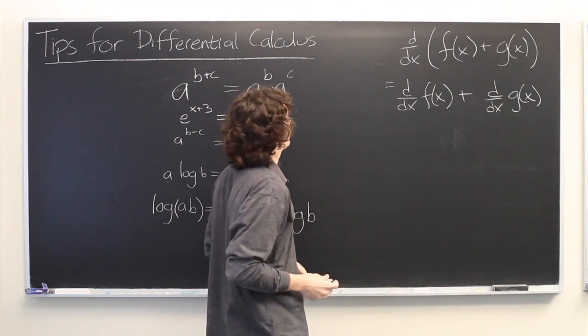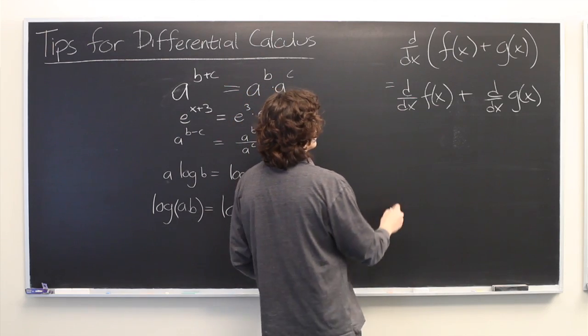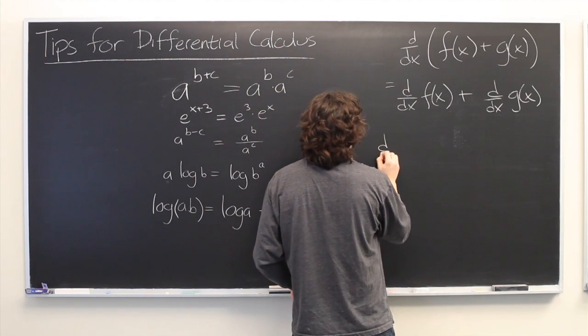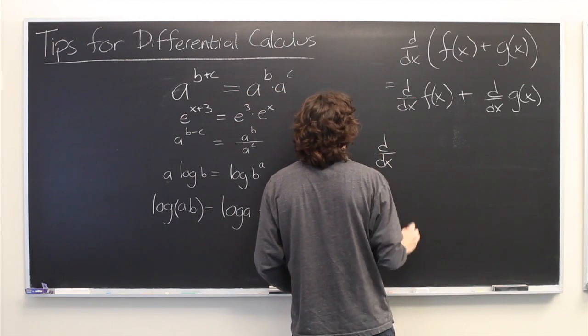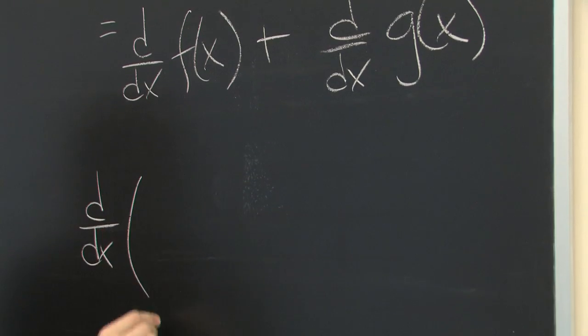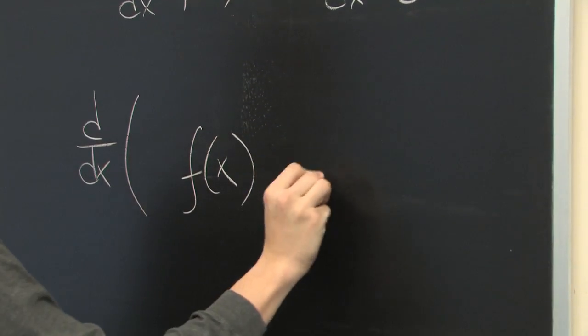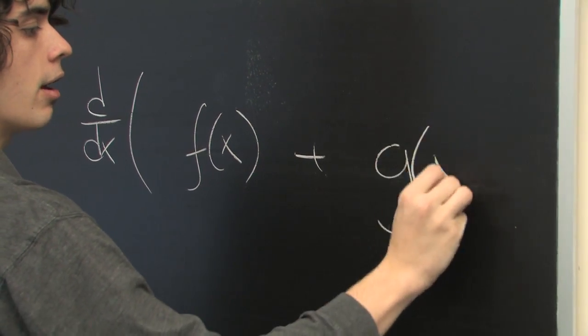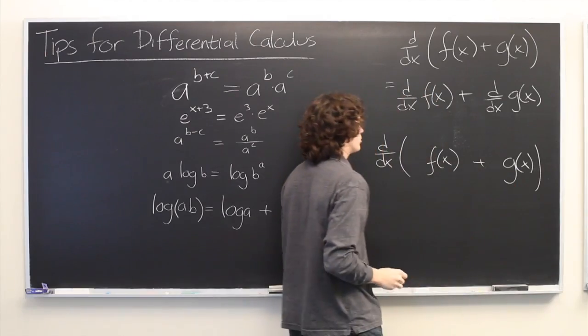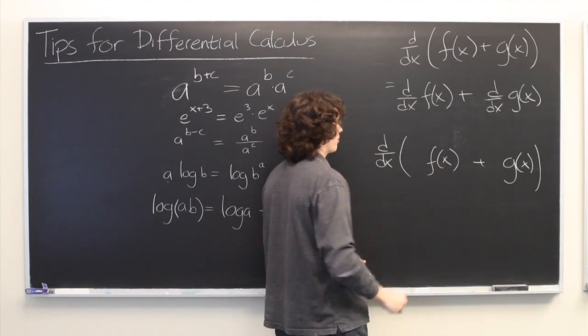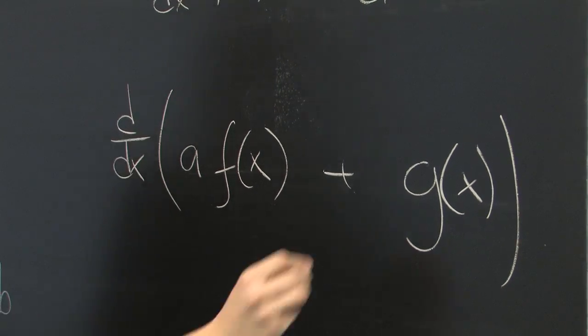But suppose we've got something like this. We have the derivative with respect to x, again f of x plus g of x, but this time let's say we've got some constants thrown in there. Call them a and b.